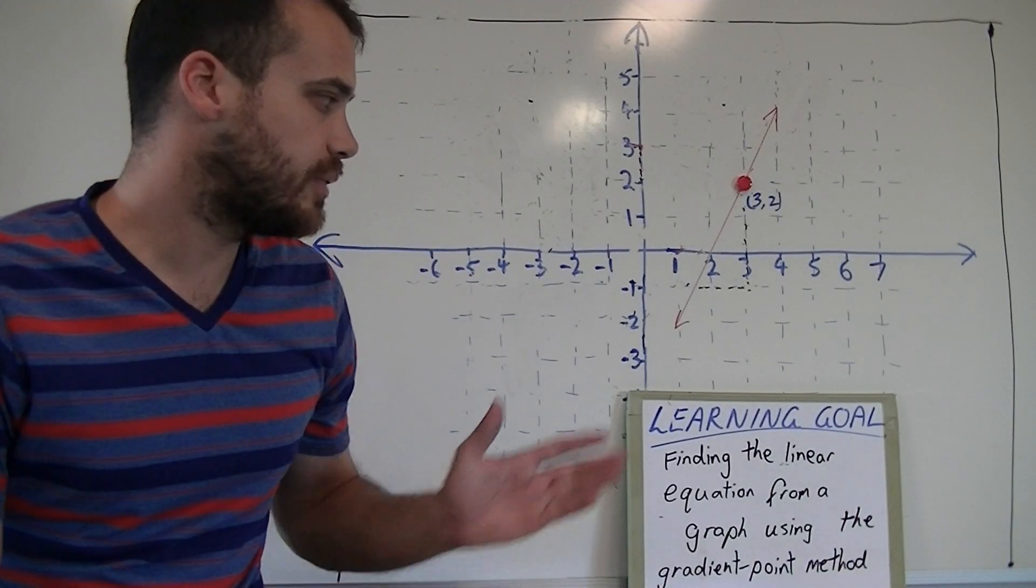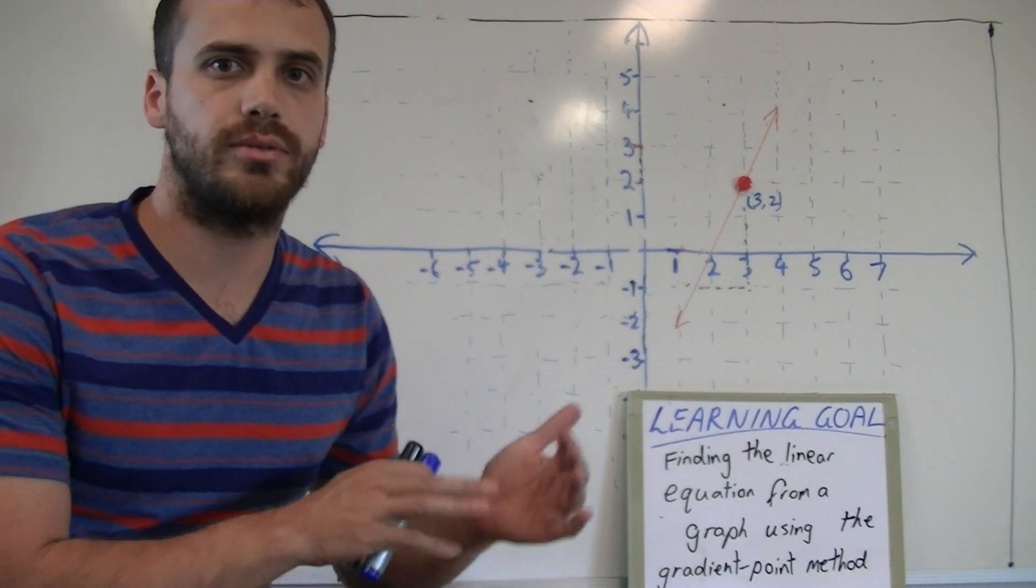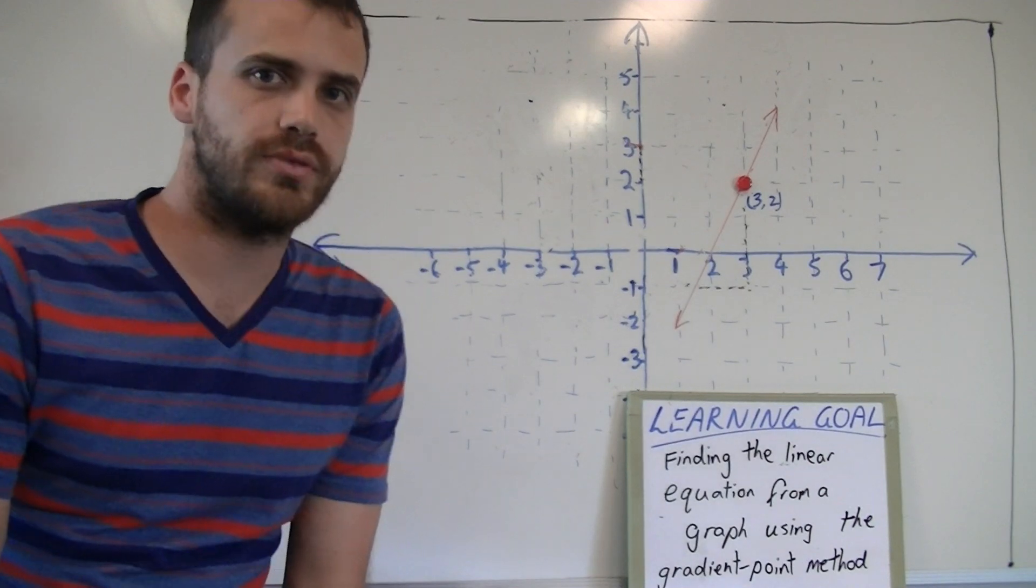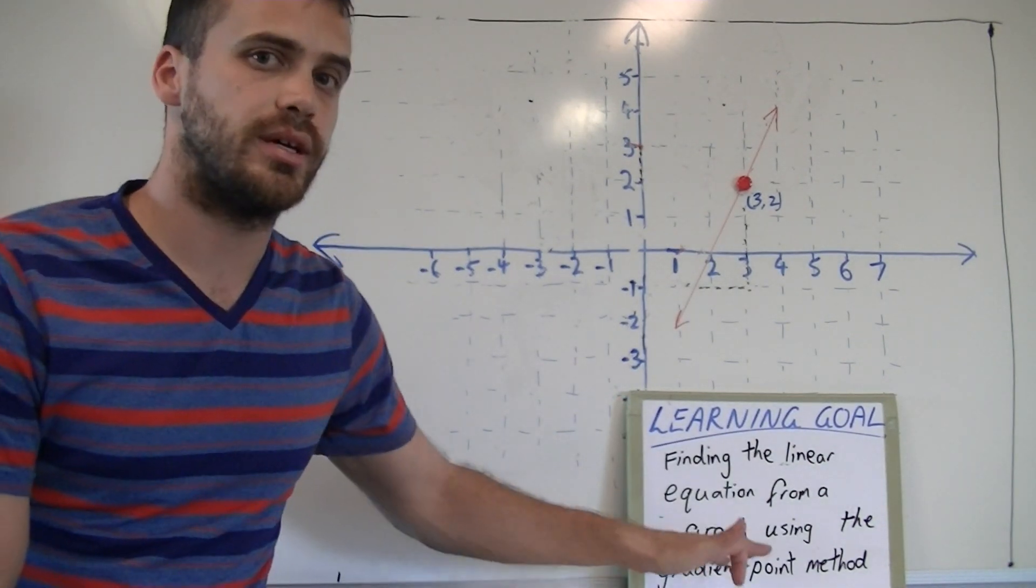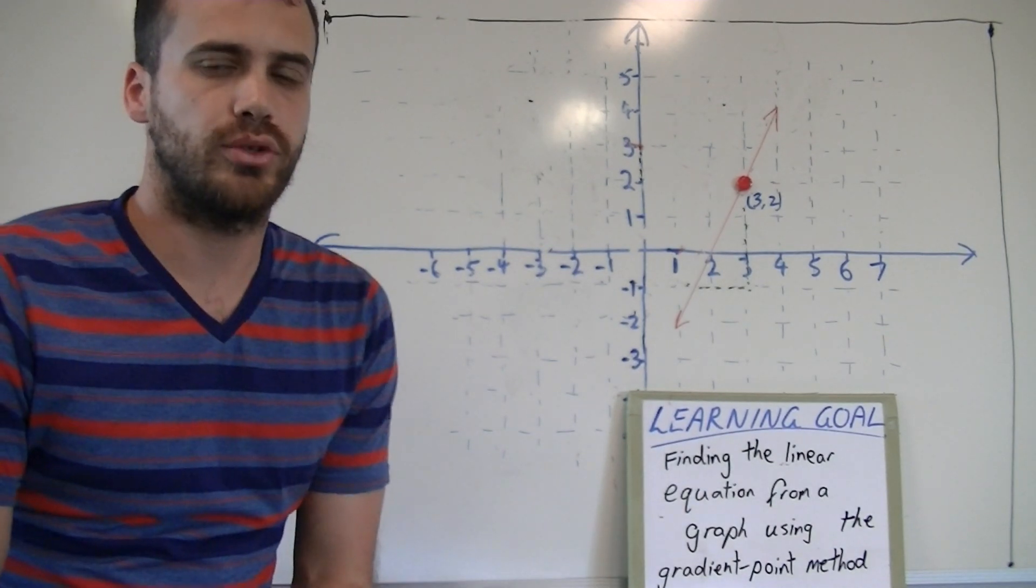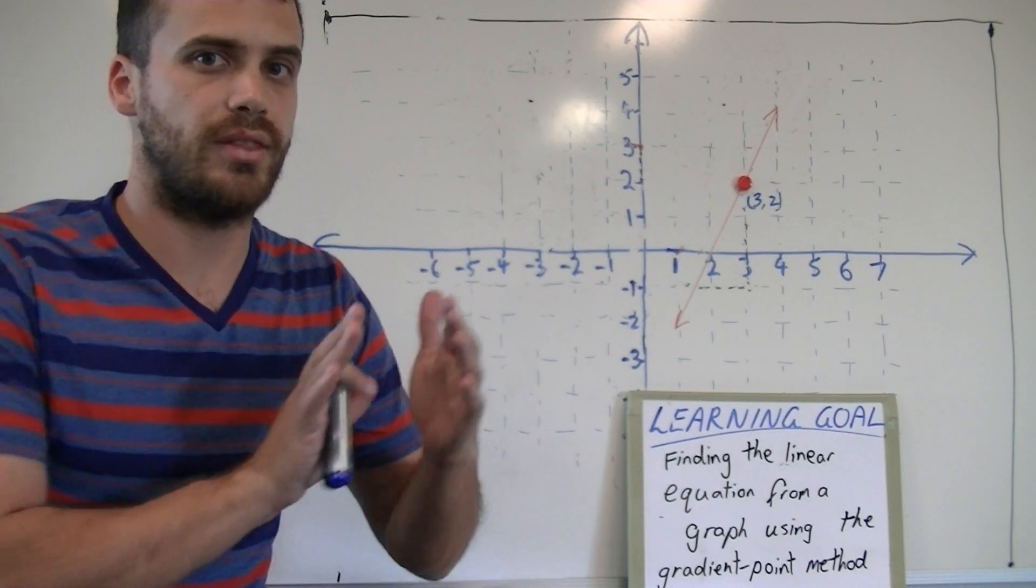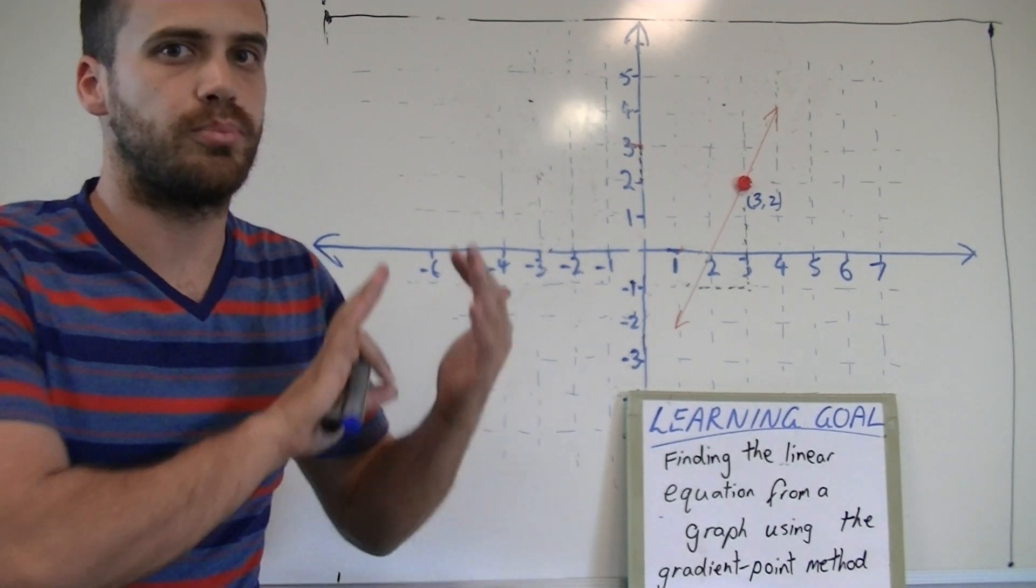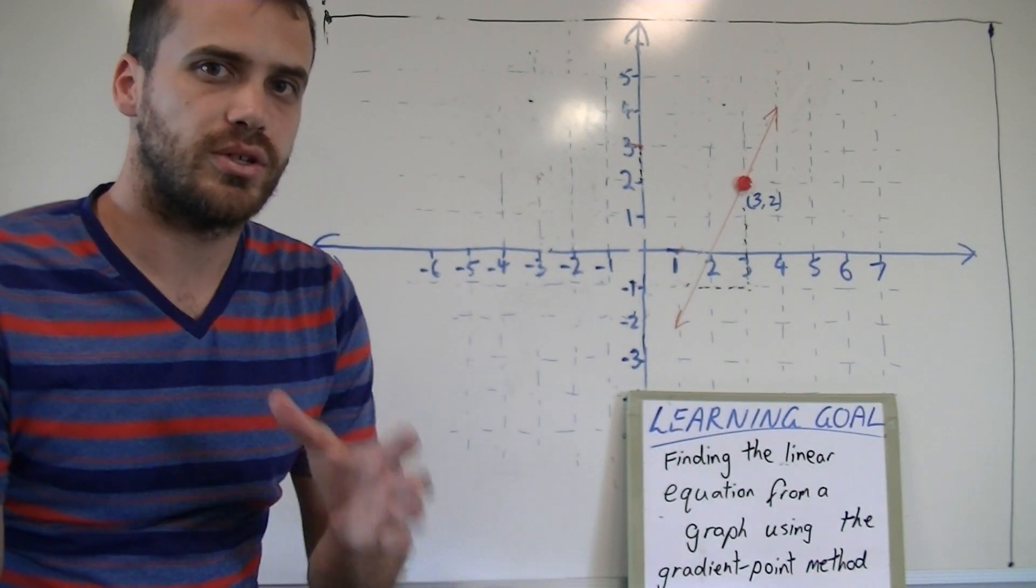Alright, so in this video we're finding the linear equation from a graph using the gradient point method. In your last video you found the equation from a graph using the gradient intercept method. Now you'll remember that the gradient intercept method used the gradient and the y-intercept to put back into our general equation y equals mx plus c to find the equation.